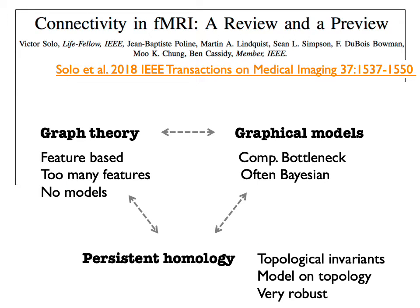To answer that question, we can use existing methods such as graph theory or graphical models. However, graph theory has the problem of thresholding — you don't exactly know where you have to threshold the correlation matrices. Also, existing graphical models are often very time-consuming and don't necessarily give you the best computational solutions. So we use persistent homology, which gives us results very quickly. For this we use two concepts: graph filtrations and exact topological inference. The strengths and weaknesses of each method are explained in a review paper by Victor Solor.